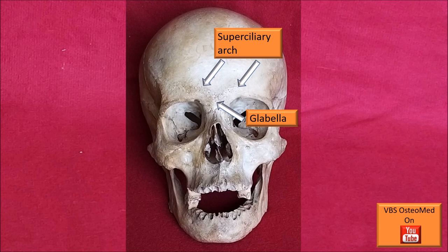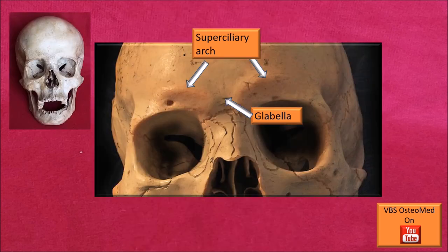In this area of the frontal bone, there is a raised area immediately above the orbits called the superciliary arch. These two ridges meet in the midline to form another midline elevation called the glabella. These are not very well seen in this particular photograph, so we will look at another skull where the superciliary arch and the central glabella are much more prominent.